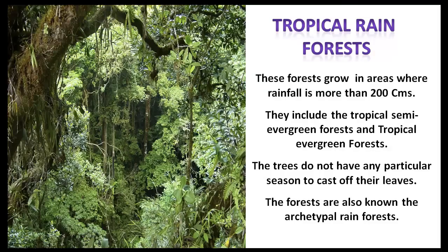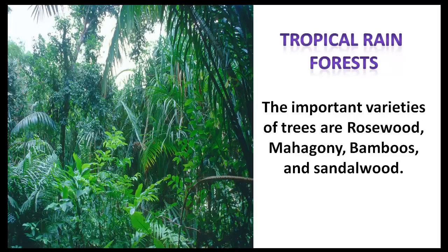Tropical rainforests grow in areas where rainfall is more than 200 cm. They include the tropical semi-evergreen forests and tropical evergreen forests. The trees do not have any particular season to cast off their leaves. The forests are also known as the archetypal rainforest. The important varieties of trees found in the tropical rainforests are rosewood, mahogany, bamboos and sandalwood.